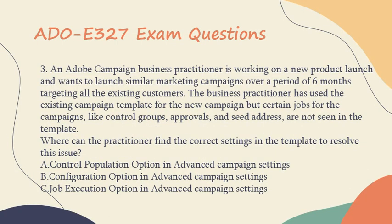Question 3: An Adobe Campaign Business Practitioner is working on a new product launch and wants to launch similar marketing campaigns over a period of six months targeting all the existing customers. The business practitioner has used the existing campaign template for the new campaign, but certain jobs for the campaigns, like control groups, approvals, and seed address, are not seen in the template. Where can the practitioner find the correct settings in the template to resolve this issue?